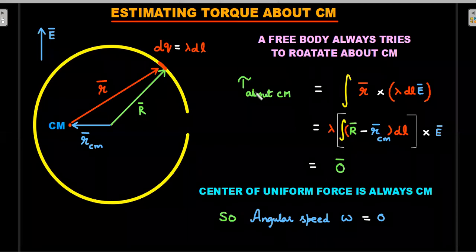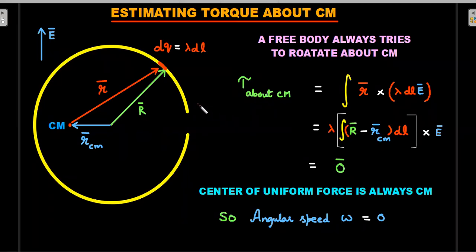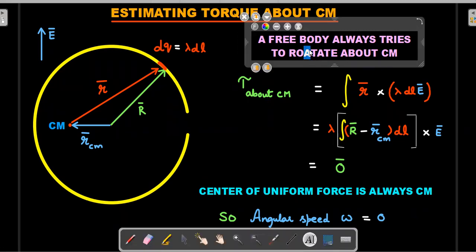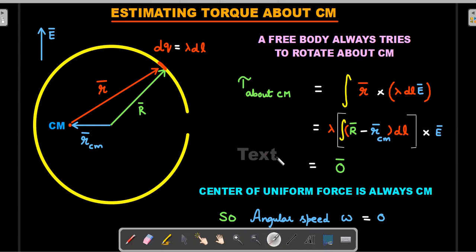Estimating the torque about center of mass: why center of mass? Remember, this particular ring is in the uniform field, and it's in free space, so electric field is the only force that would be acting on this charged ring. If I want to calculate the torque, any free body when having a force, if it has to rotate, it will rotate about center of mass. This is a standard understanding that we have because the moment of inertia of any body about center of mass is the least.